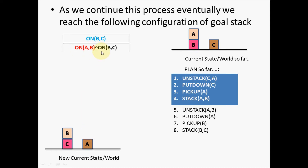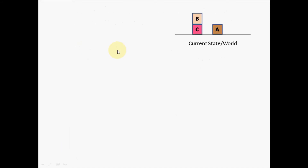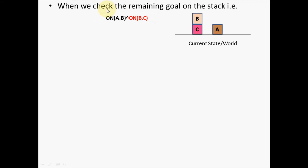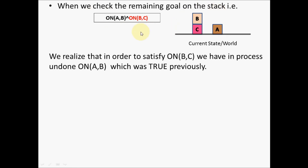Keep this in mind. Once on(B,C) is now true with respect to the current world, on(B,C) will be removed from the stack to reveal the next predicate. When we check the remaining goal on the stack, only on(A,B) remains. We then realize that in the process of satisfying on(B,C), we have undone on(A,B), which was earlier true.